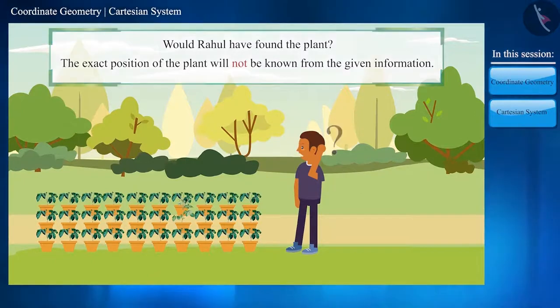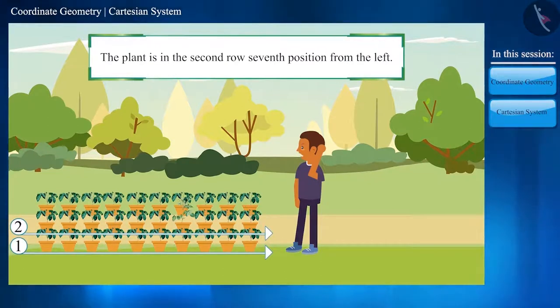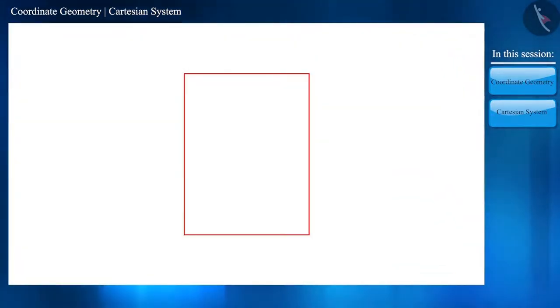If he would have gotten the information that the plant is in the second row, seventh position from the left, then how easy it would have been for Rahul to find the plant.